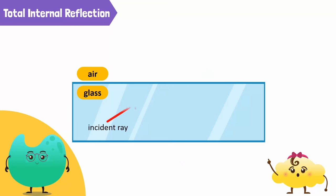When the angle of refraction is equal to 90 degrees, we get a critical angle, denoted by C.